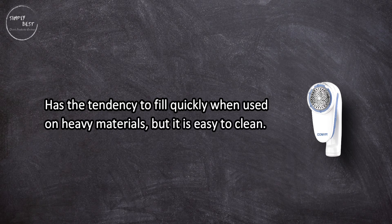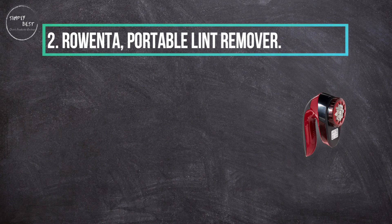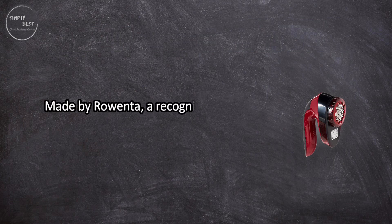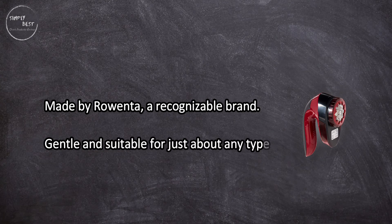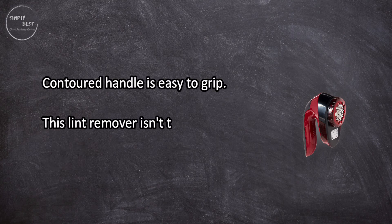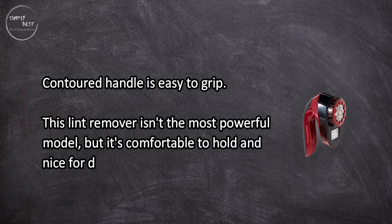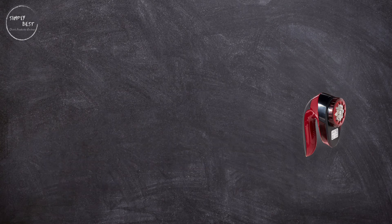At number two, Rowenta portable lint remover, made by Rowenta, a recognizable brand. Gentle and suitable for just about any type of material, the contoured handle is easy to grip. This lint remover isn't the most powerful model, but it's comfortable to hold and nice for delicate fabrics and minor lint removal tasks.